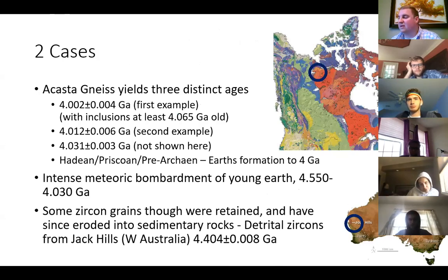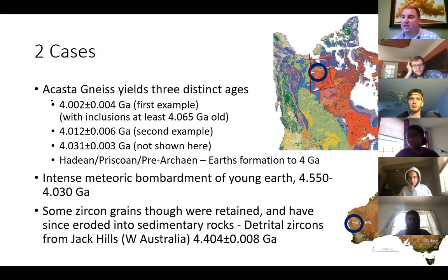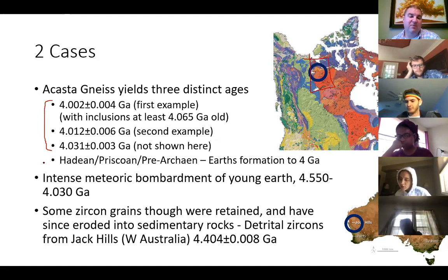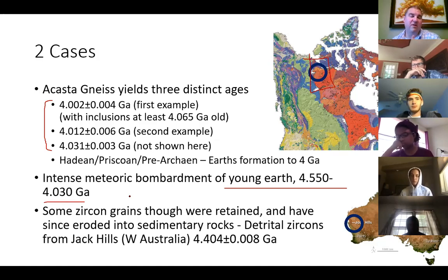On earth, the oldest stuff we can see are really these zircon grains found in both igneous deposits and sometimes sedimentary deposits. The Acasta Gneiss in Canada gives us a few different ages just over 4 billion years old. These match the Hadean, Priscoan, Pre-Archean ages for Earth's formation. Current theories hold that there was an intense meteoric bombardment between 4.5 and 4 billion years ago, so the surface of the earth would have still been molten and couldn't form zircon grains until it cooled.